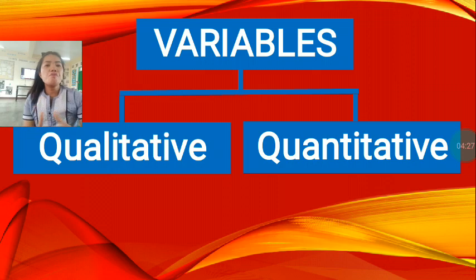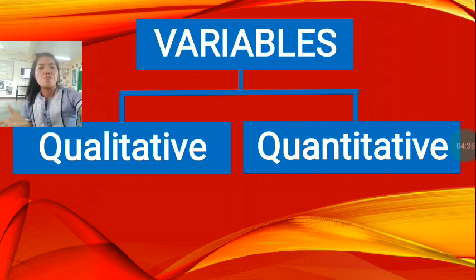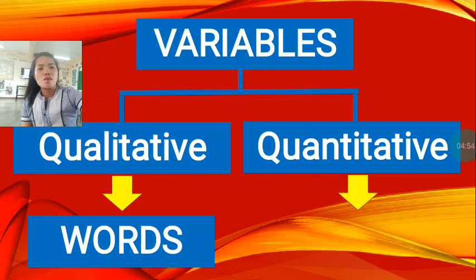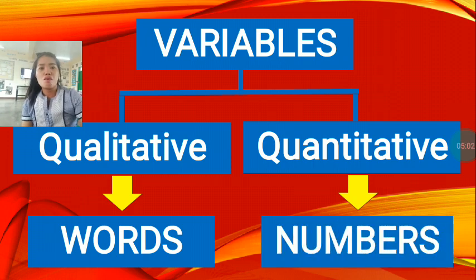Now, the variables are classified into two. We have the qualitative and the quantitative. For the qualitative, as the term suggests, from quality, from the word quality, it will definitely use or uses words. And quantitative, from the root word quantity, it definitely uses numbers.